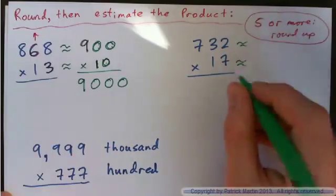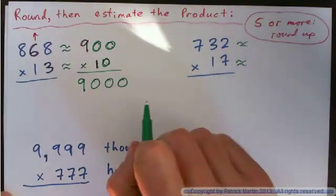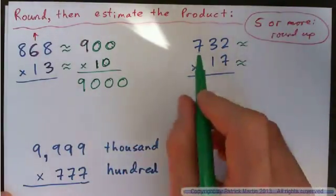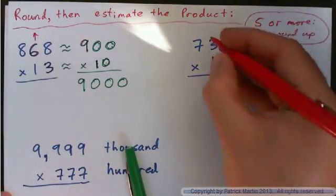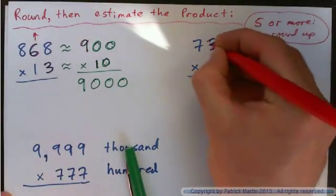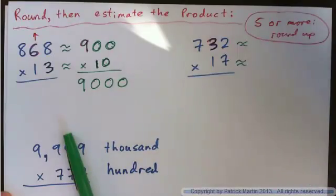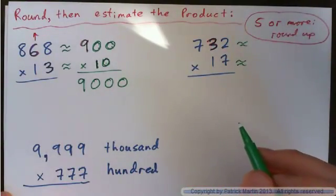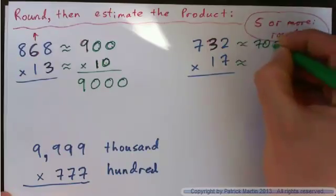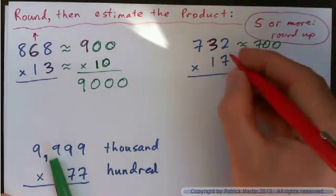So let's estimate this guy. Seven hundred thirty-two times seventeen. Seven hundred thirty-two is approximately what? And again, you probably, you could round that to the nearest hundred, right? So the next digit after the seven is three, so you're going to round up or down? Round down to seven hundred. And then we have seventeen.